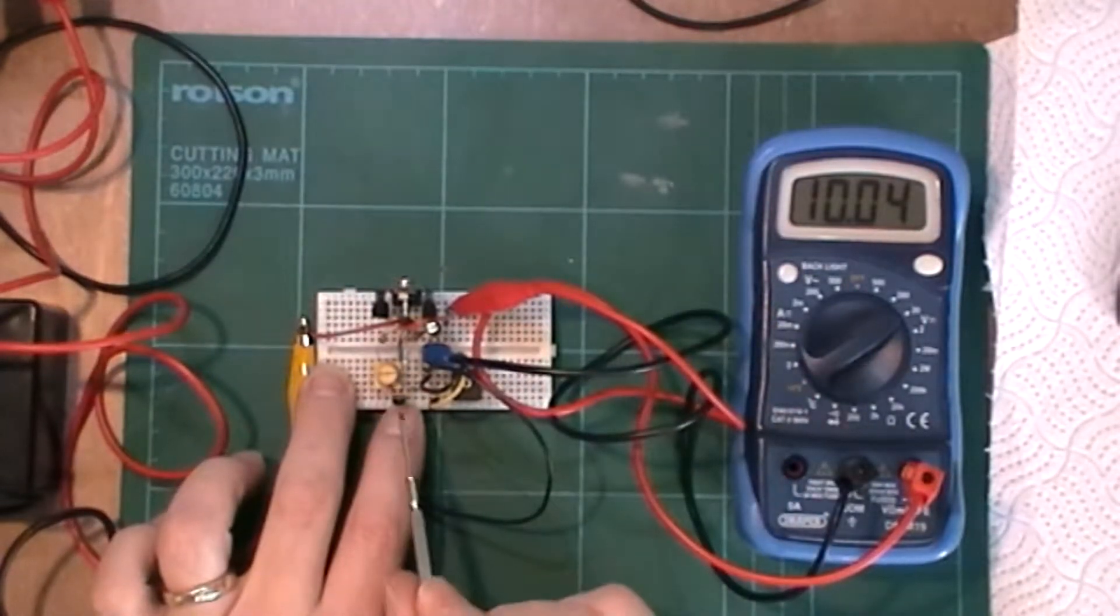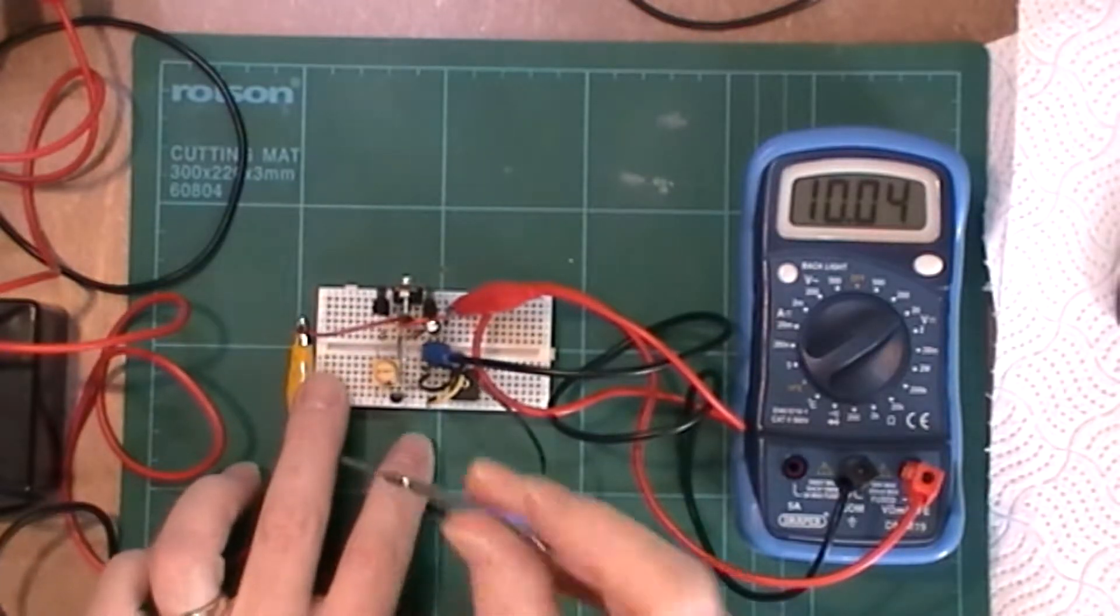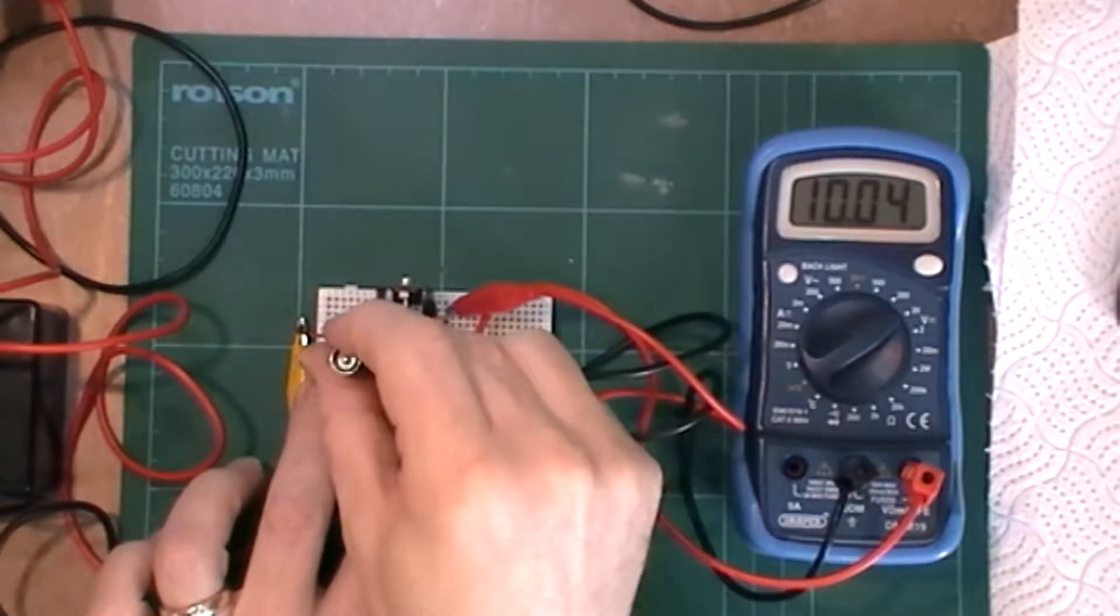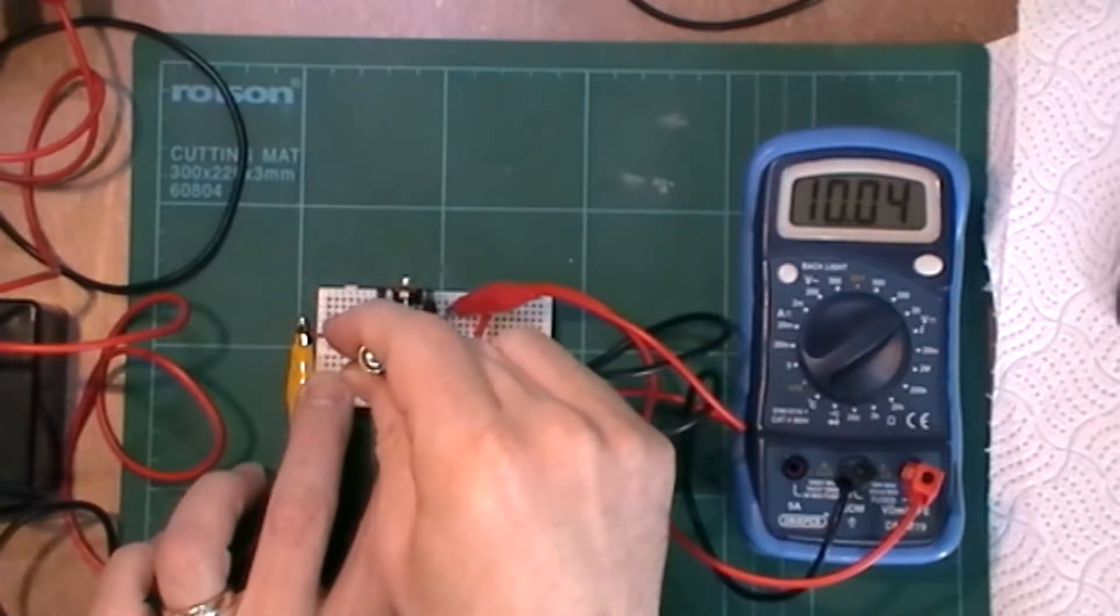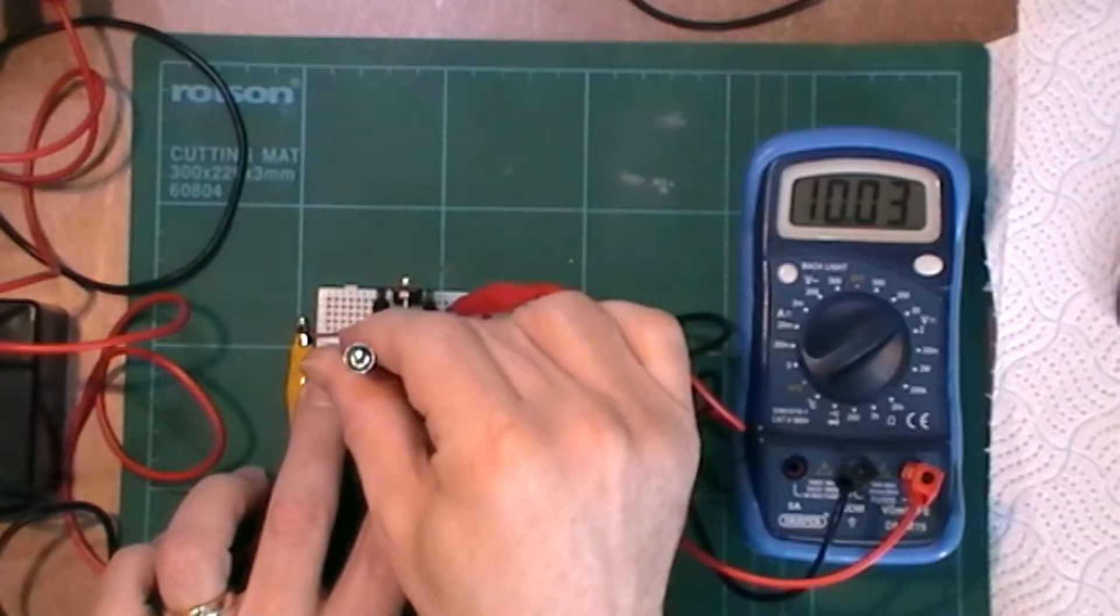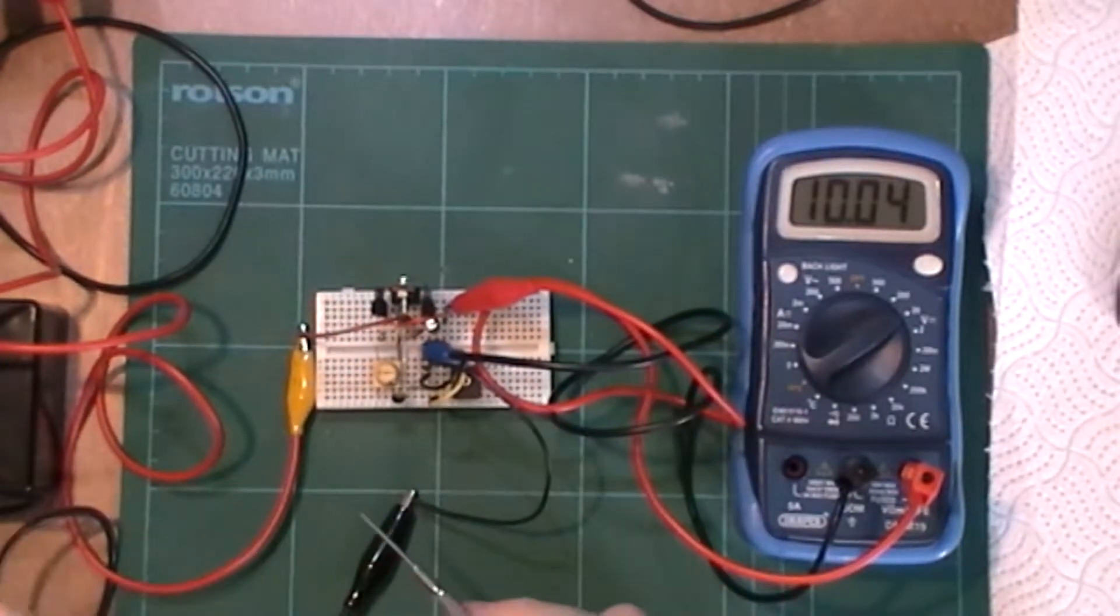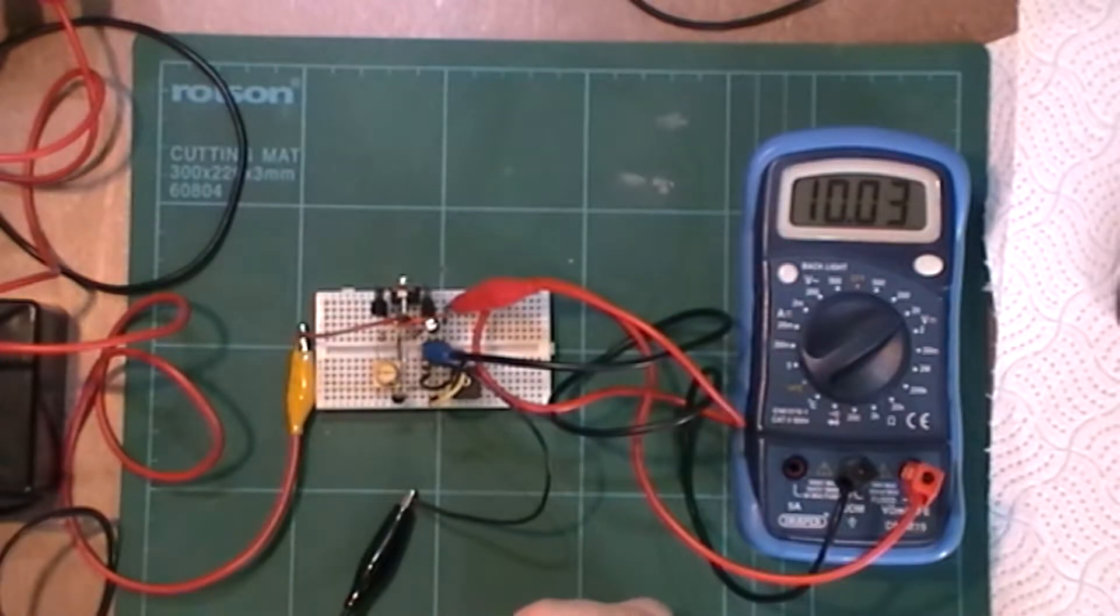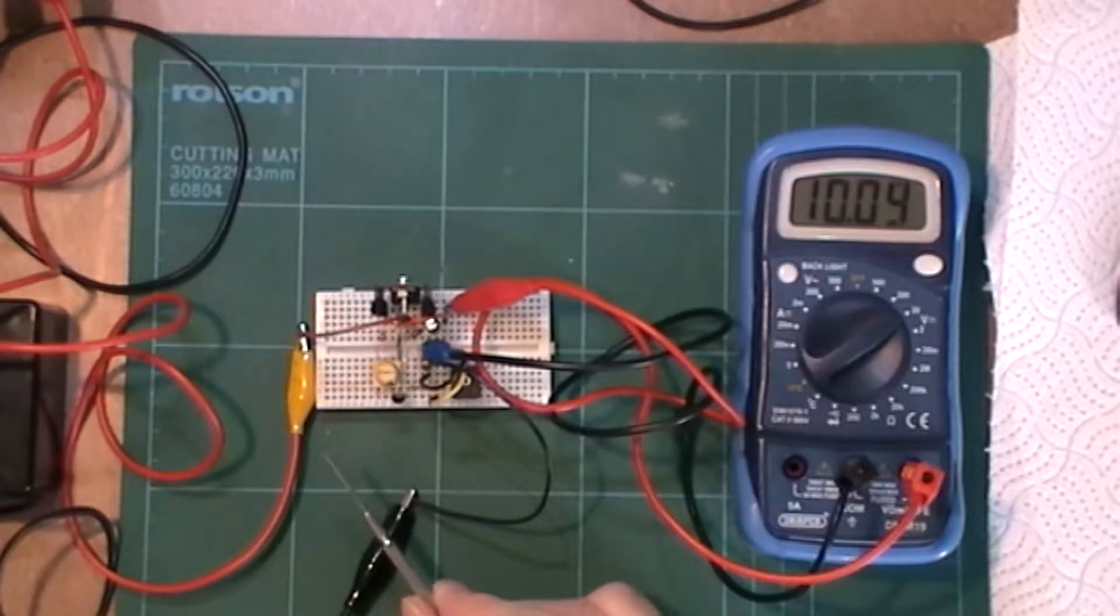But then we've got this trimmer for this LM336 and I'm not really sure what that's going to do. And actually it doesn't really seem to do anything. So don't quite understand the point of it unless maybe it just helps keep this more precise so there's less chance of it drifting from whatever you've set it to.